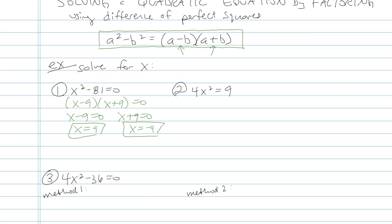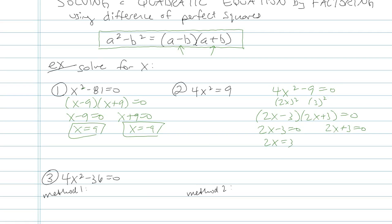Here's another one: 4x squared equals 9. First thing I need to do is write this in standard form, because for factoring it always needs to be written in standard form. Then the first thing being squared here is 2x and the second thing being squared is 3. So I'm going to put that into my difference of perfect squares: 2x minus 3 times 2x plus 3. There's my factored form. Since the directions told me to solve, that means I need to get x equals something, so I'm going to set each factor equal to 0 and solve for x.